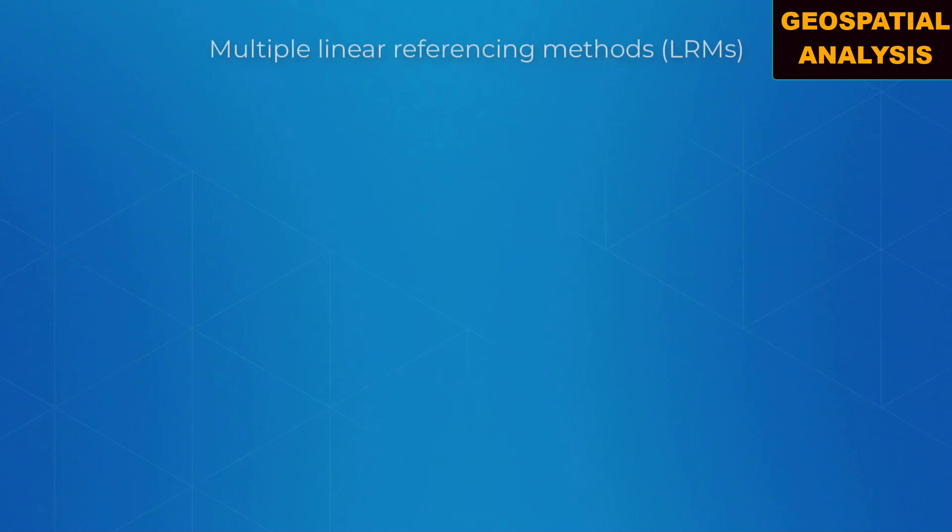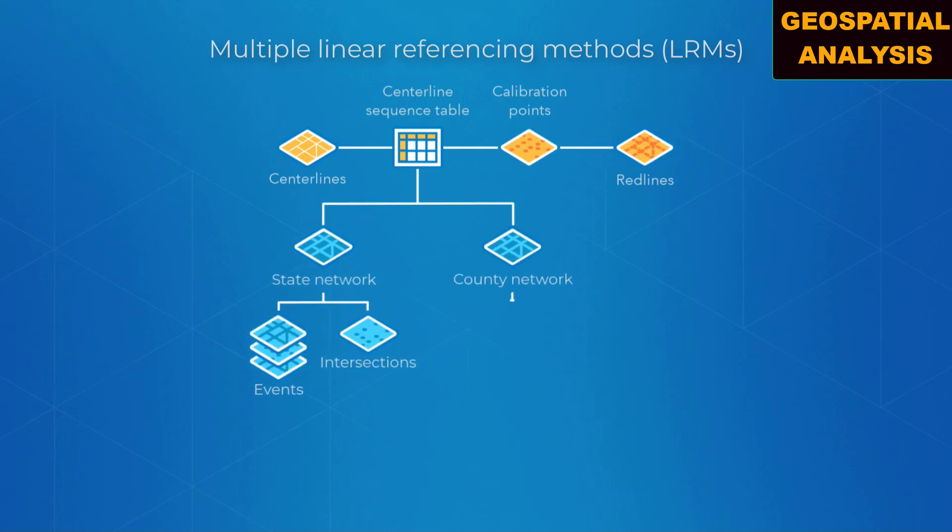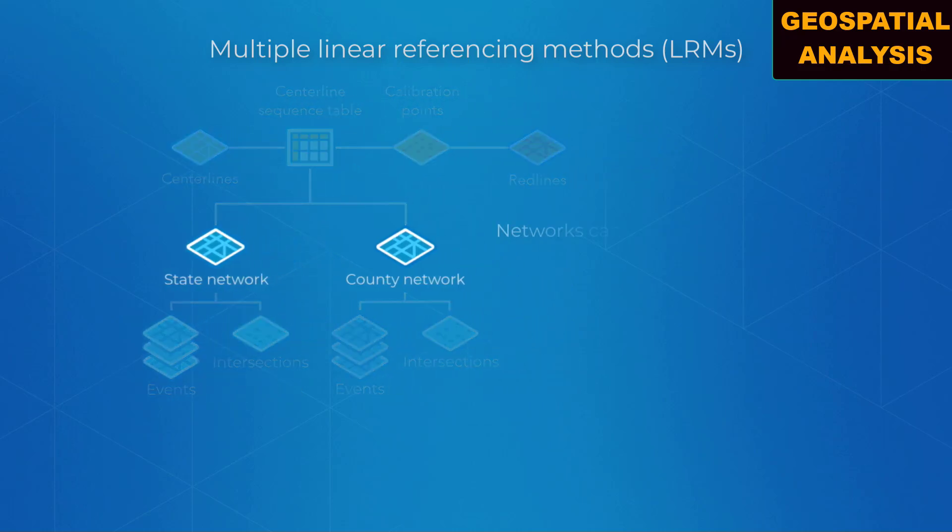ArcGIS Roads and Highways is a multi-LRM LRS. The information model simplifies the management of multiple measurement systems. A single LRS can contain multiple networks, and each network can have a different LRM.